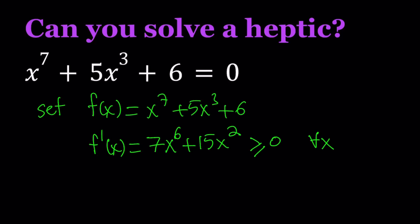So, let's take a closer look. Differentiate this one more time. And that gives us 42x to the power 5 plus 30x.